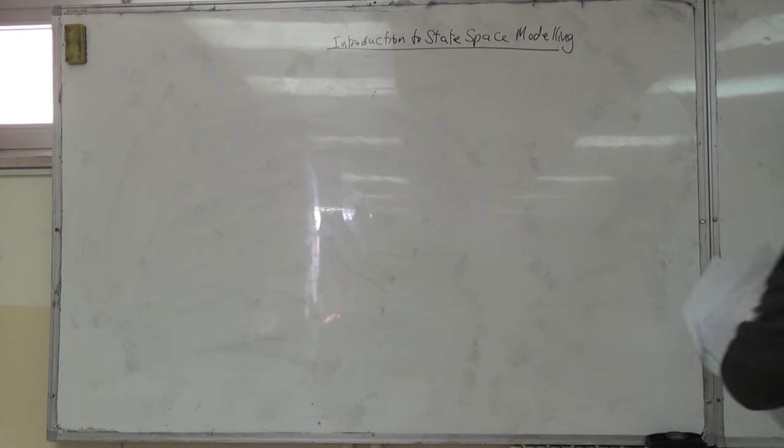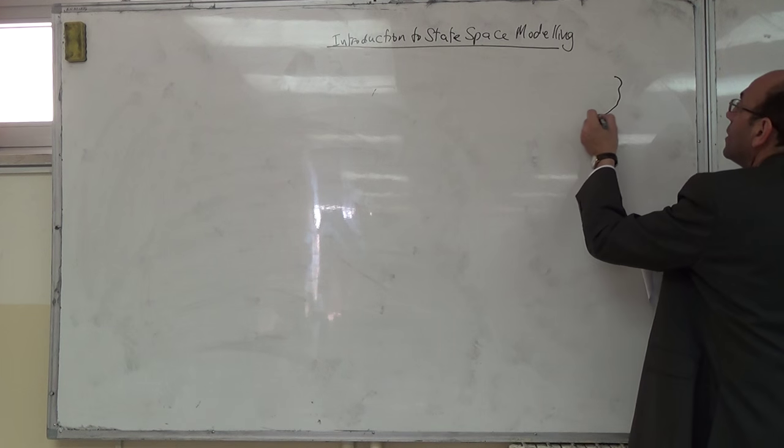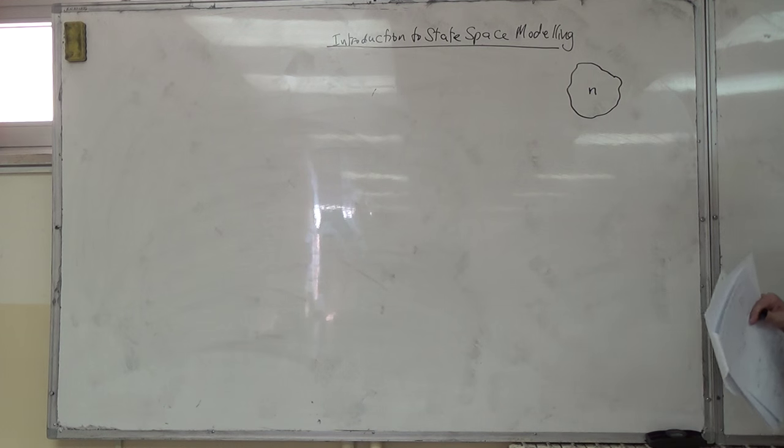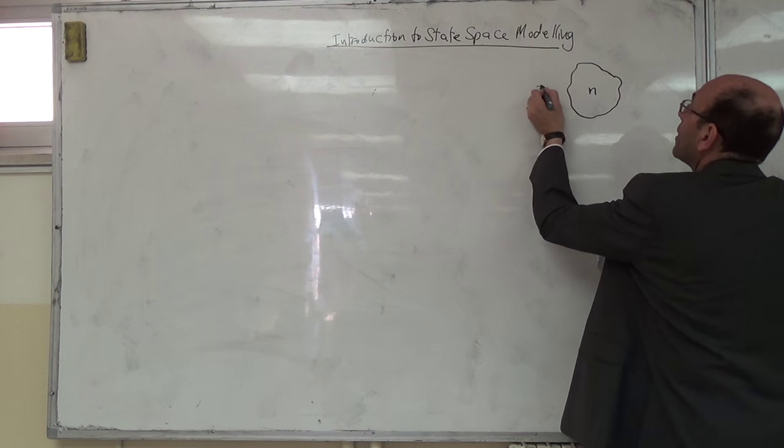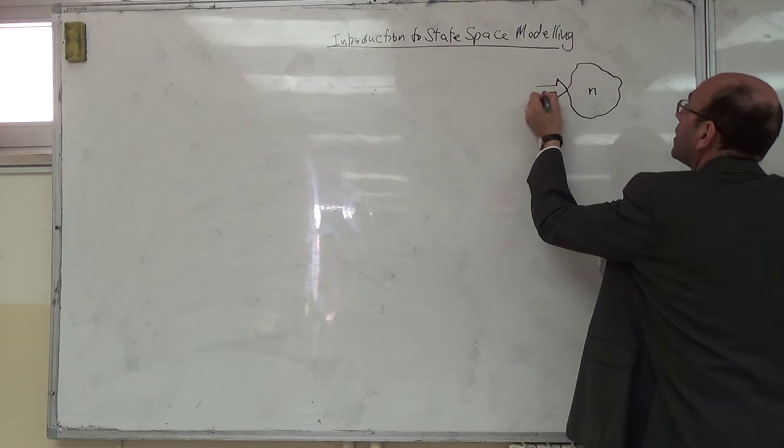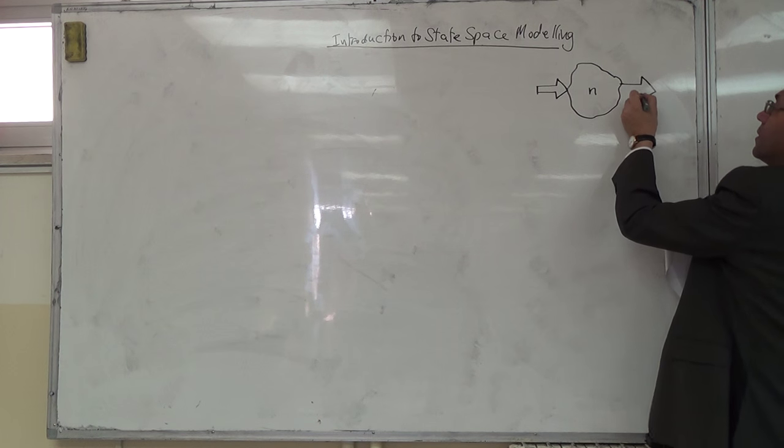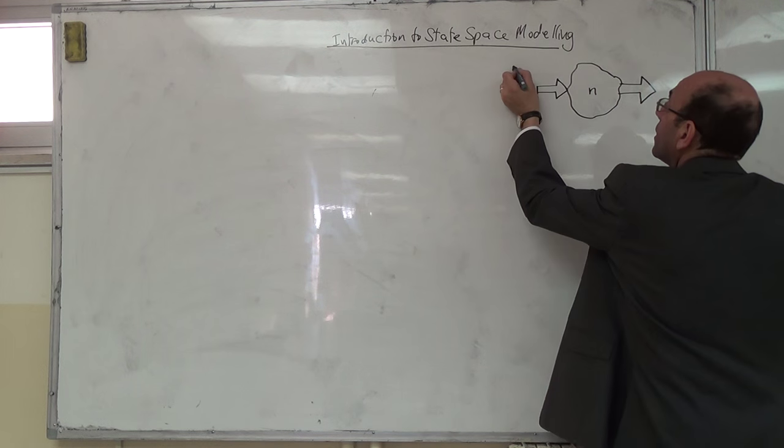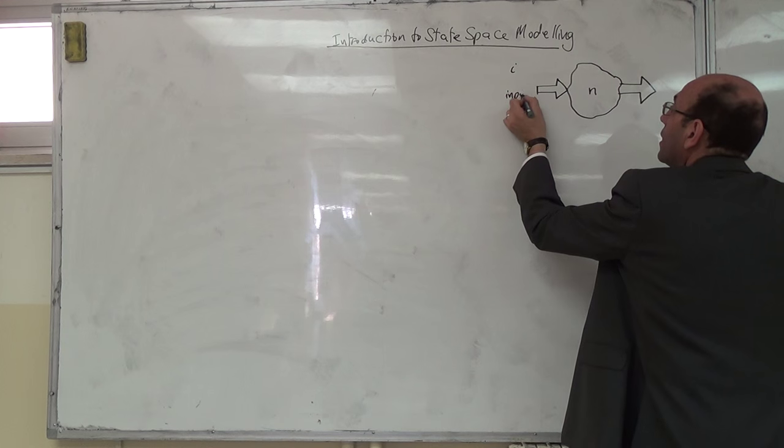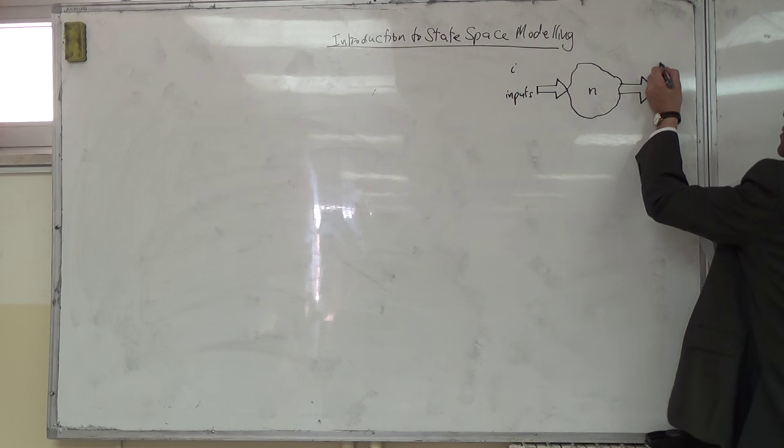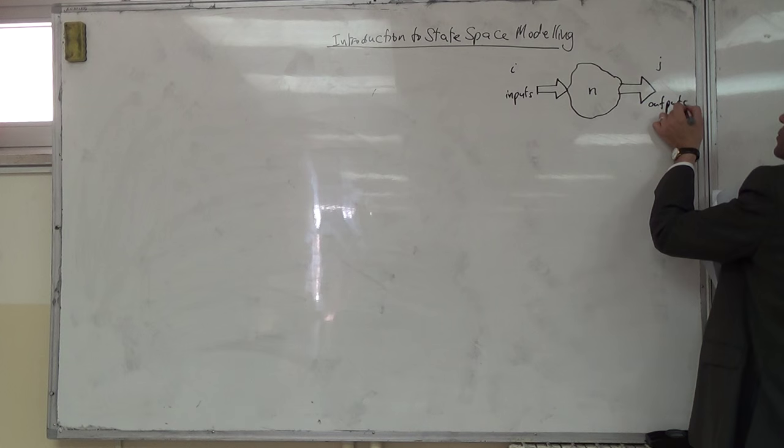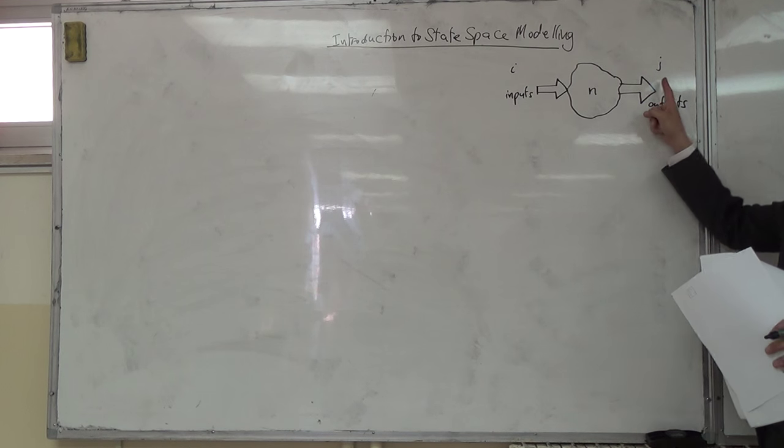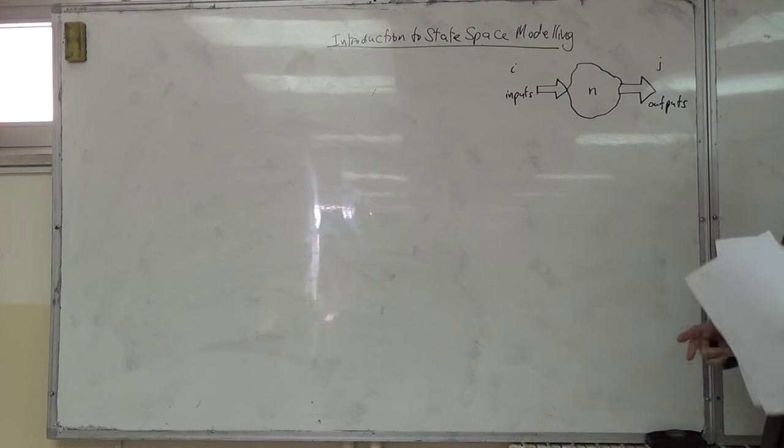راح حطنا السيستم هون. راح افترض إنه عندي هون N states للسيستم، عندي هون عدد من الانبوتس و عدد من الاوتبوتس. رح افترض إنه عندي I inputs وعندي J outputs.